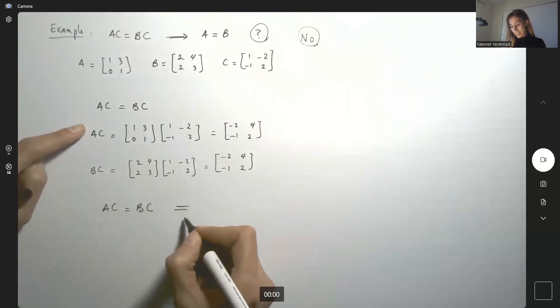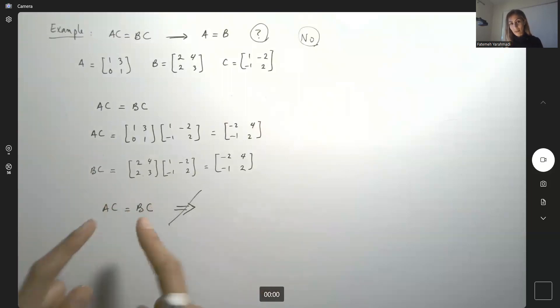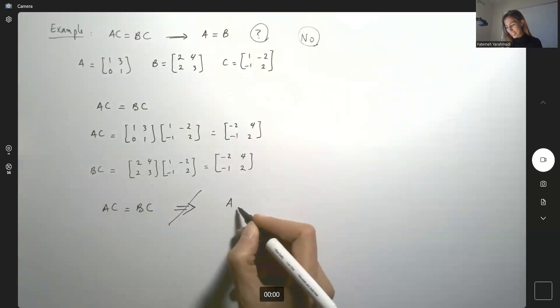But as you can see, we cannot conclude that we can cancel out C and C and A and B are the same because obviously A and B are not the same.